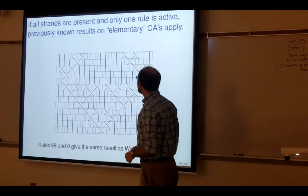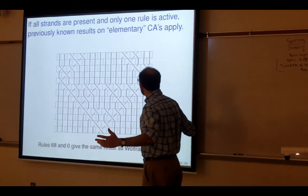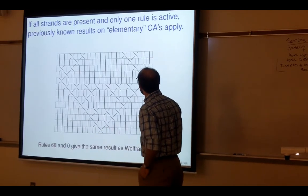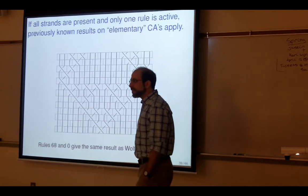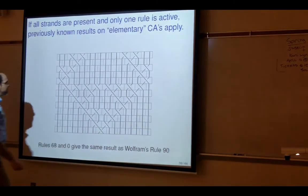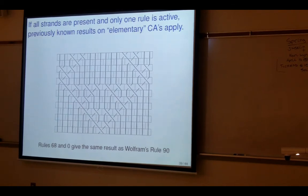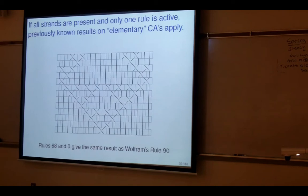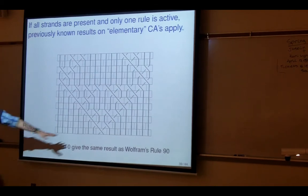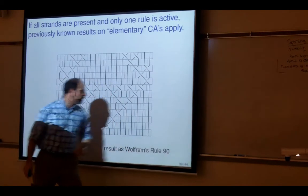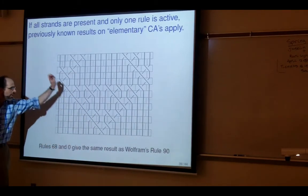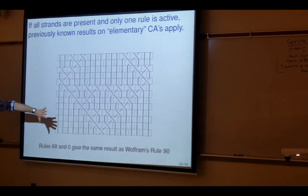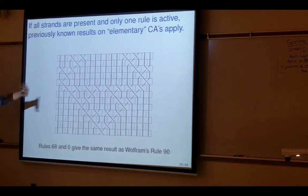So what do we know theoretically? If you don't have to worry about missing strands and you're only using a crossing or a turning rule — not both — then this is essentially an elementary cellular automaton where you ignore the middle cell of the neighborhood. This is exactly the same as Wolfram's rule 90: with all crossings in the same direction, and just determining whether you cross or turn, map one to white and one to black and you get exactly the same pattern.